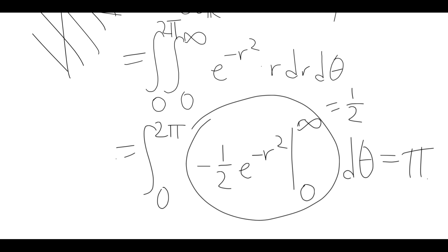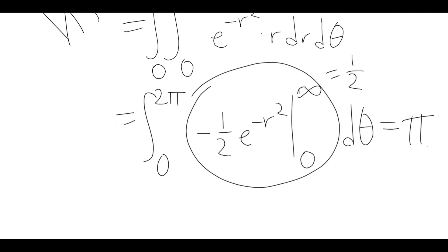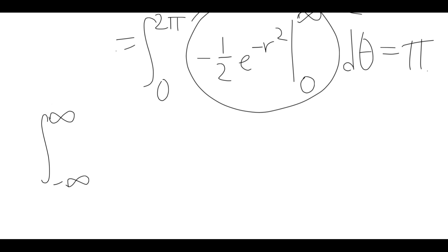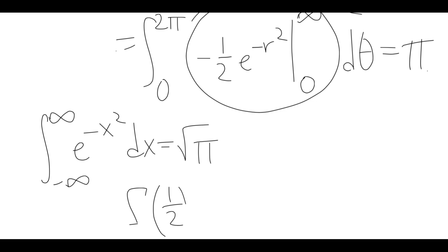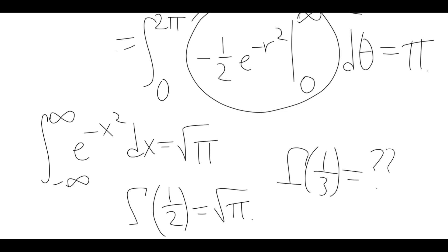That was the square of the thing we wanted, because we started with two copies of the integral. So we can say the integral from minus infinity to infinity of e to the minus x squared is the square root of pi, or equivalently, gamma of one-half equals the square root of pi. Unfortunately, half-integers are the only non-integers where we can find the gamma function exactly in closed form. For example, gamma of one-third does not have a nice form, but there are some identities we can use to simplify expressions involving things like that.